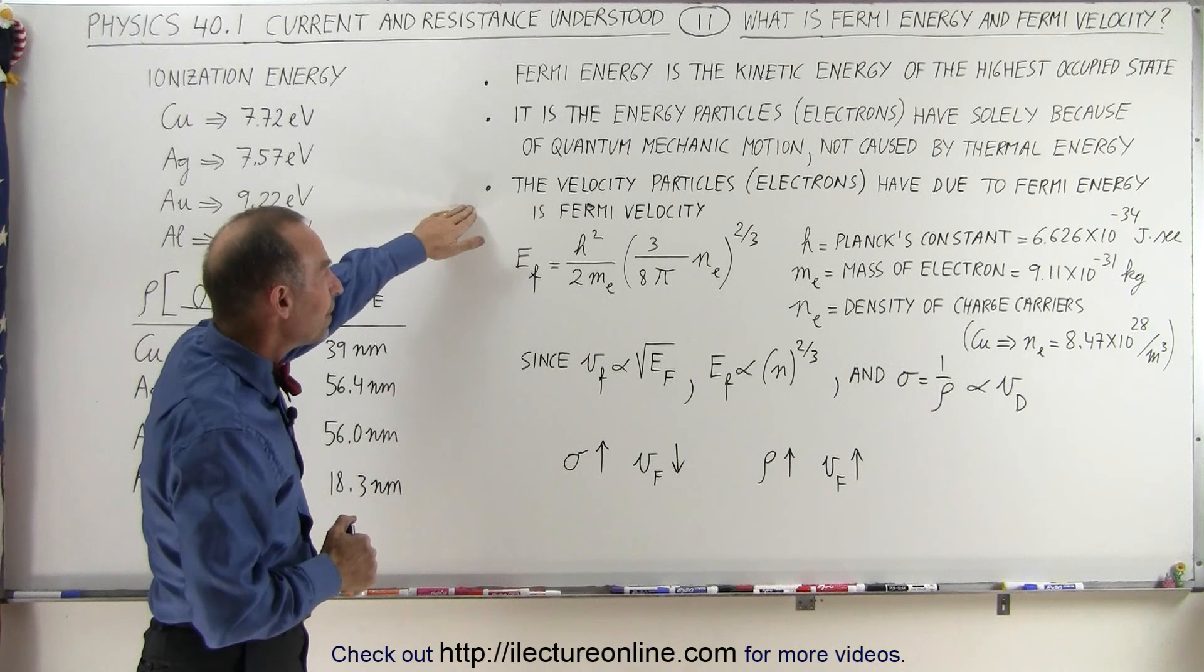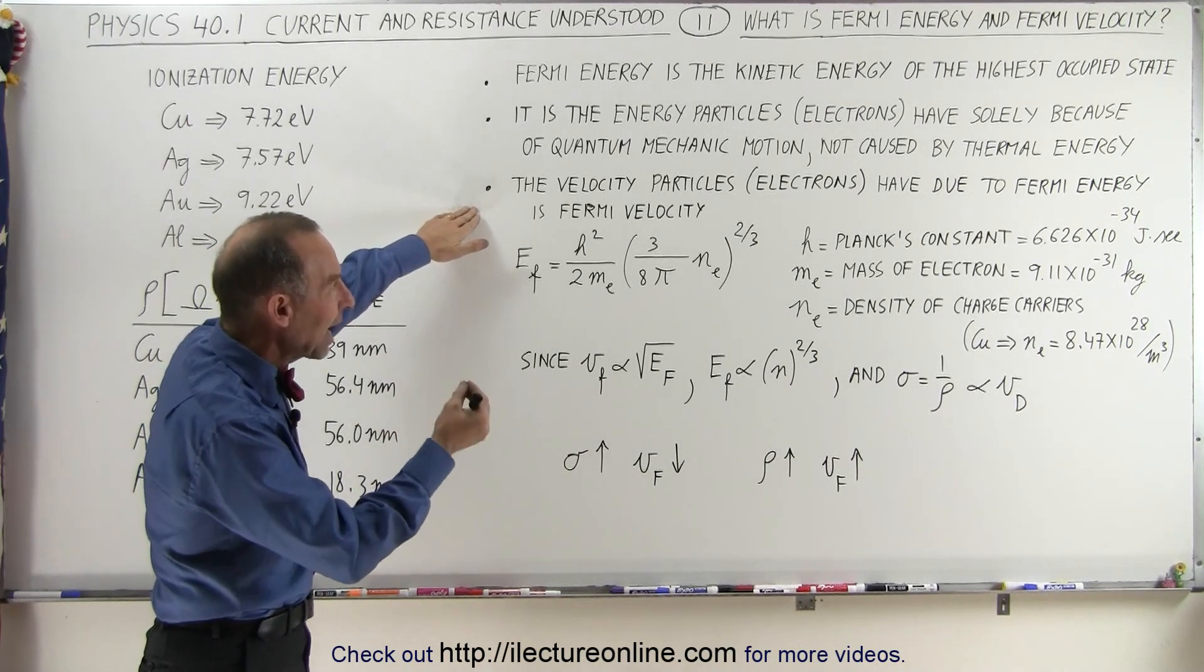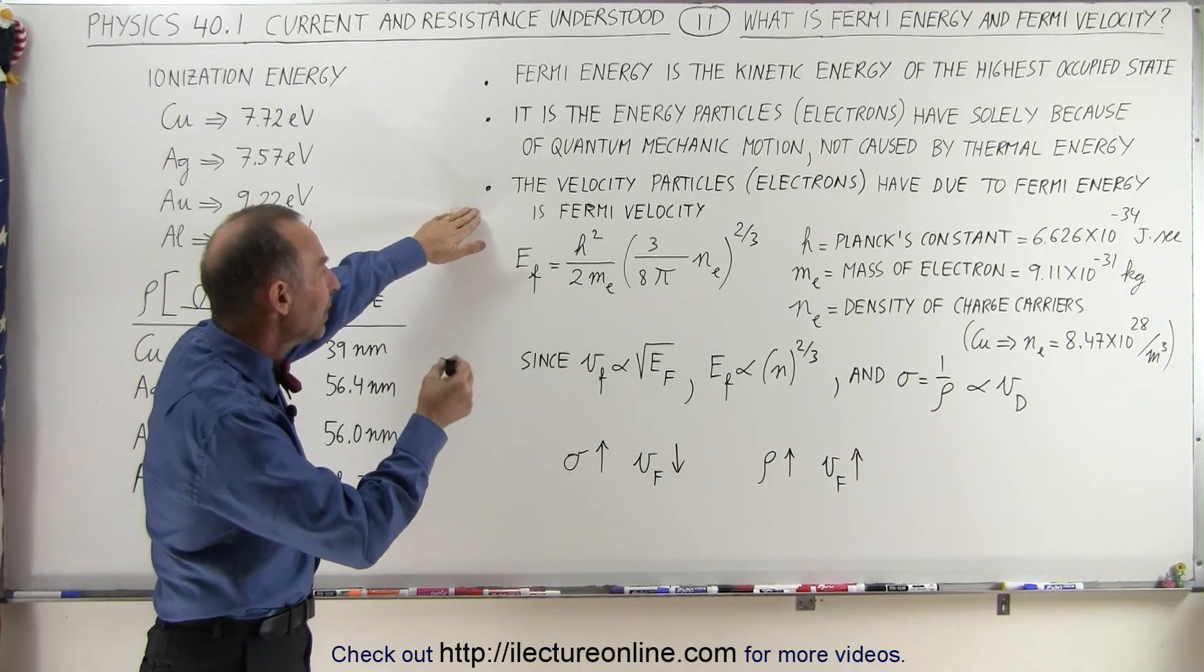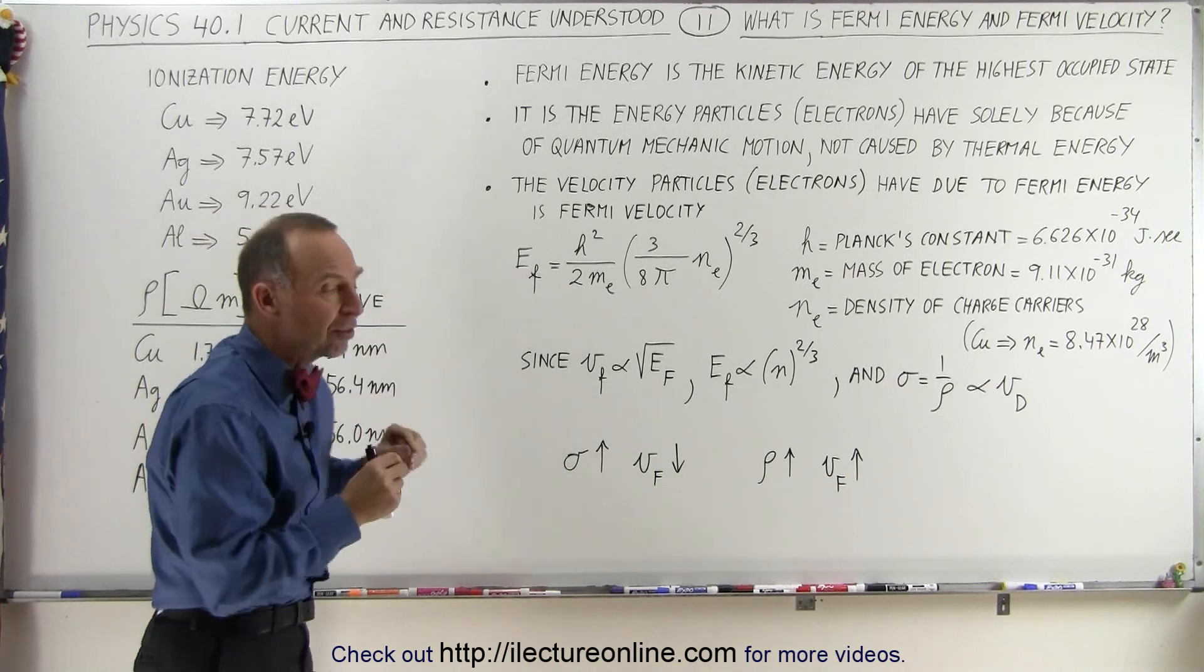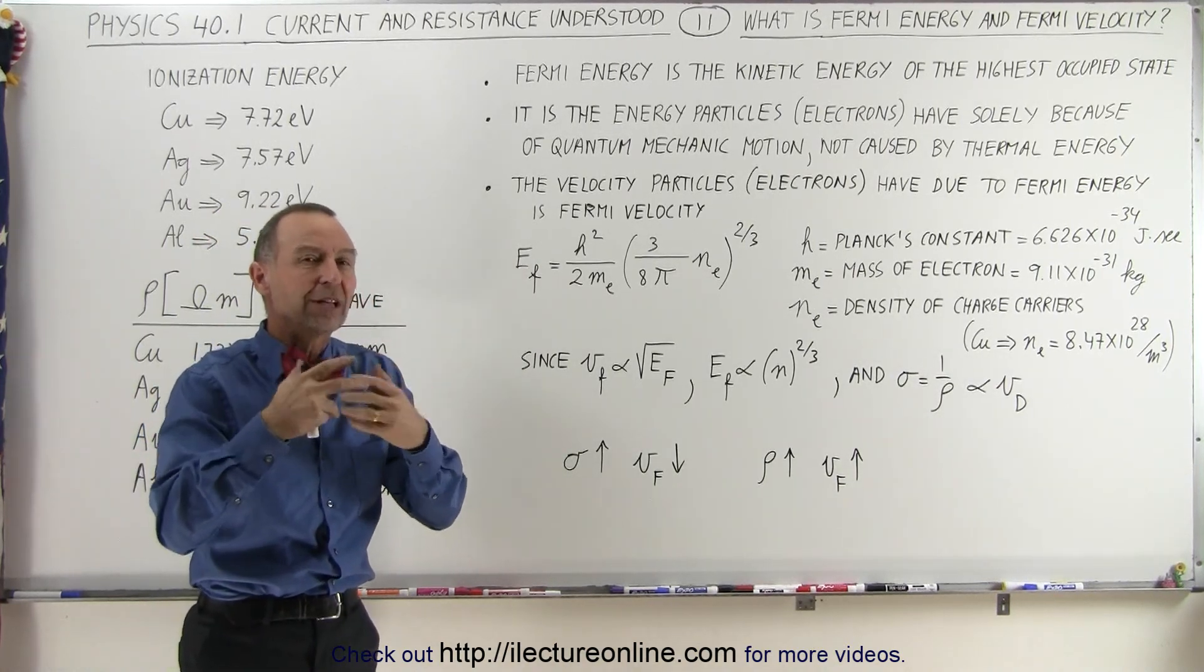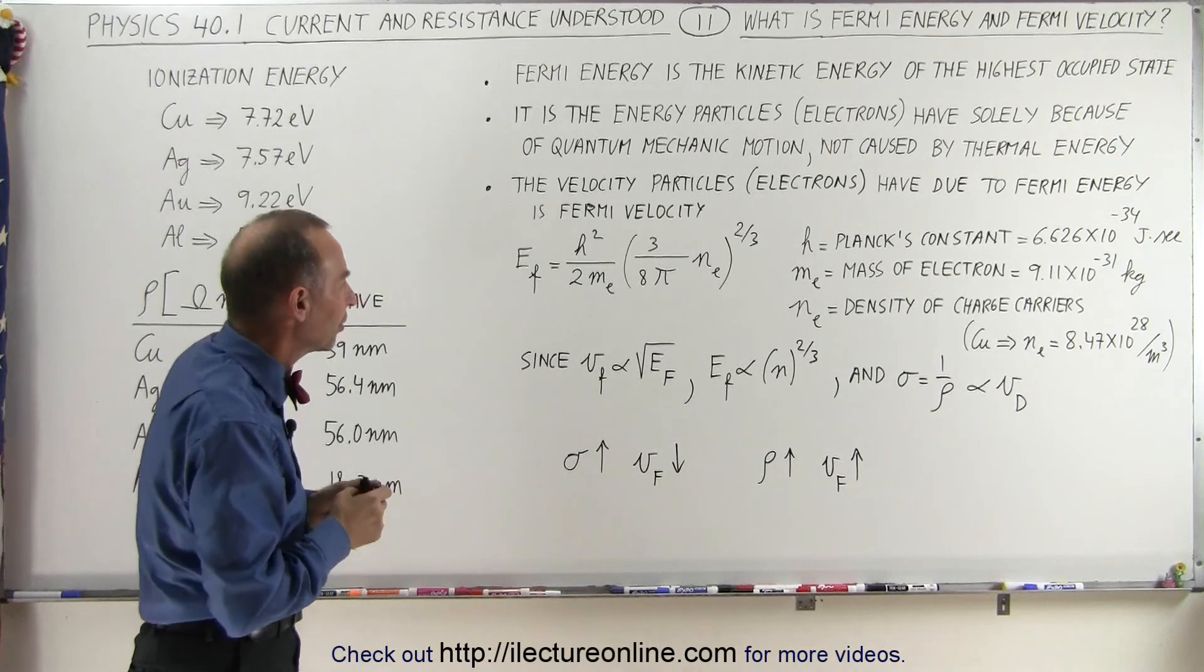And the velocity that these particles or electrons have due to Fermi energy is therefore called the Fermi velocity. So it's the quantum mechanic motion of these particles that is then known as the Fermi velocity.